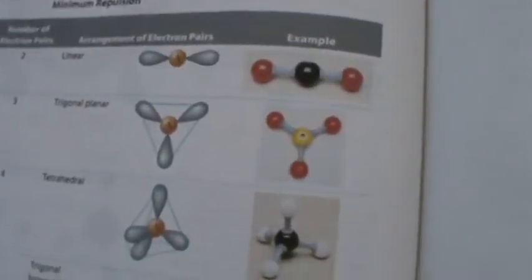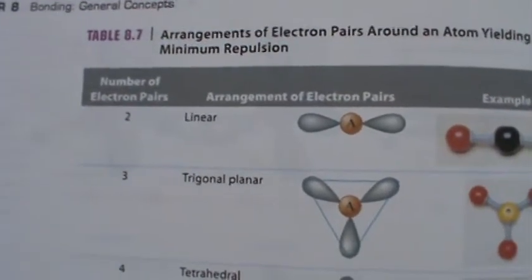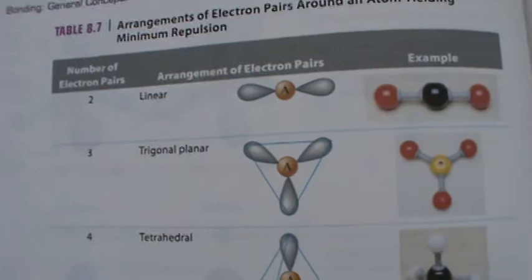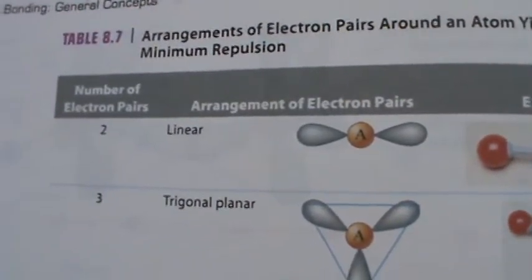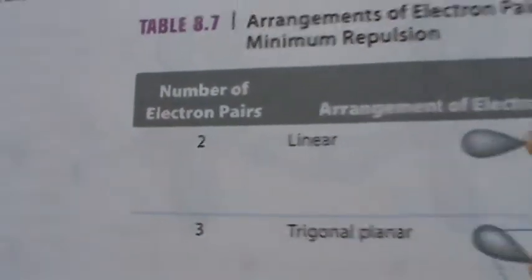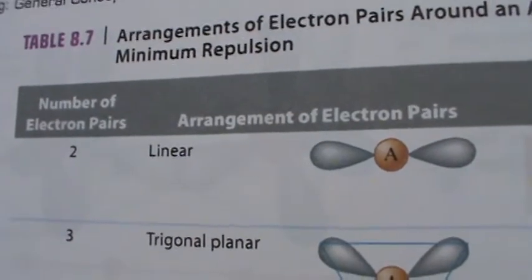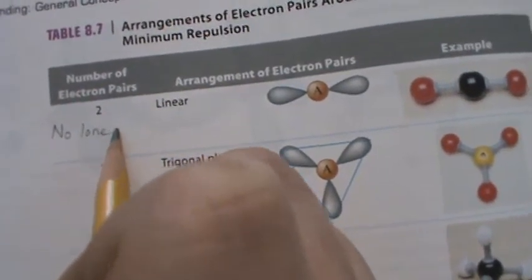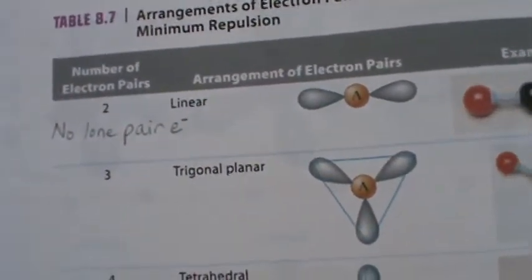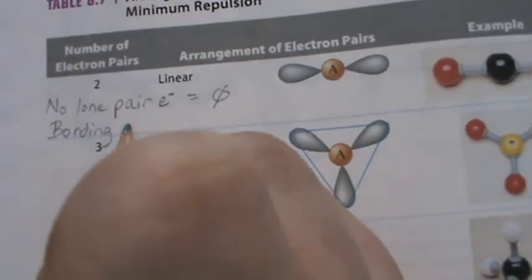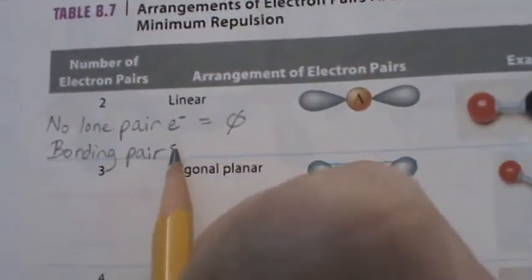Let me zoom in a little bit on the pictures in the book. You're going to see a variety of things — the arrangement of the electron pairs and an example of what it might look like. Looking at this first ball and stick model: the total number of electron pairs is two, and in this case there are no lone pair electrons, so the number of bonding pairs is two.